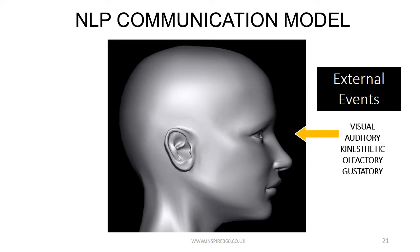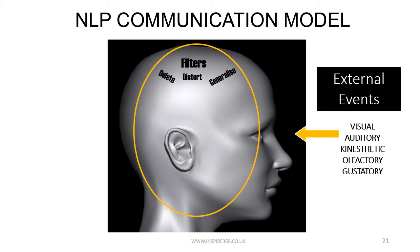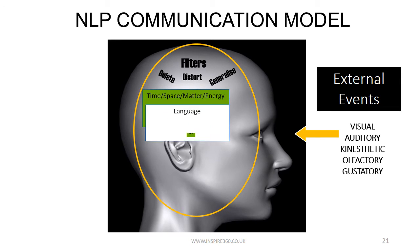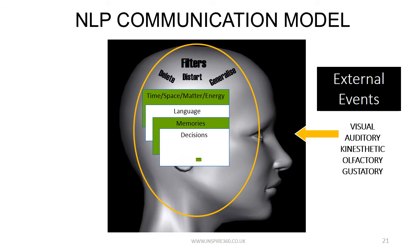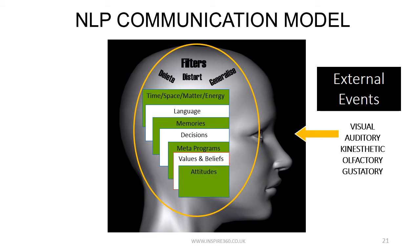Our filters in our neurology then delete, distort and generalise that information as it comes in. It's our filters — our attitudes, our values and beliefs, our metaprograms, our memories, our decisions, our language and finally time, space, matter and energy — that do the process of deletion, distortion and generalisation for each of us.